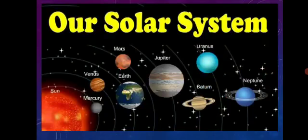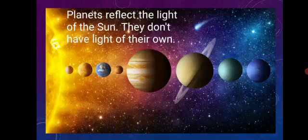The eight planets are Mercury, Venus, Earth, Mars, Jupiter, Saturn, Uranus and Neptune. Planets do not have a light of their own. They reflect the sunlight that falls on them, and this makes the planets glow.